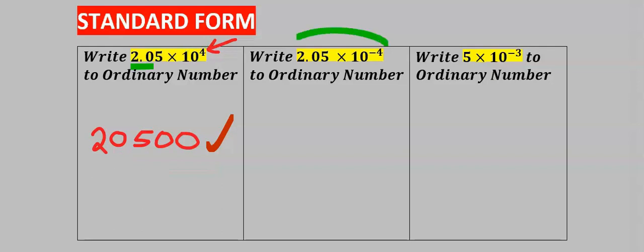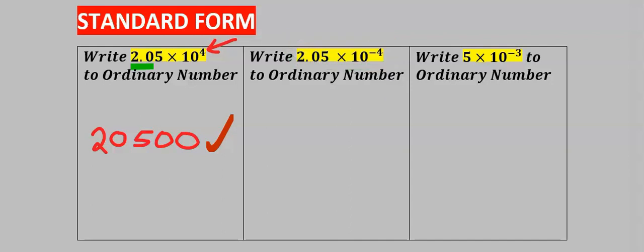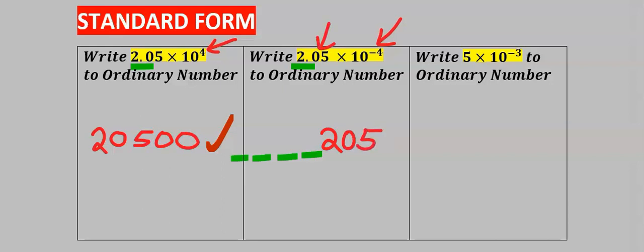Next, we're going to write this standard form to an ordinary number. Step number one: consider the first significant number here, which is two. Next, consider the power — here we have minus four, symbolizing there are four digits in front of this two. These four digits will not affect zero five — the four digits will be embedded zeros.